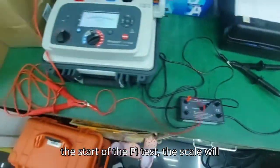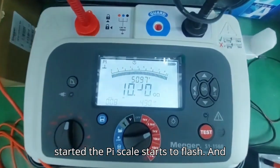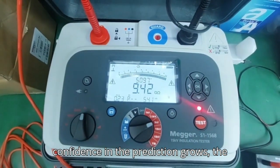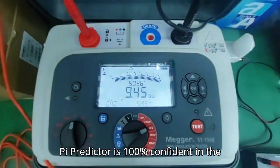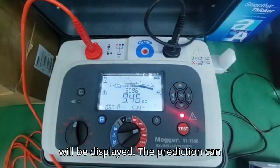During the start of the PI test, the scale will not flash. Then once the prediction has started the PI scale starts to flash. Prediction starts after 3 minutes. As the confidence in the prediction grows, the scale will become more narrow. When the PI predictor is 100% confident in the prediction, the test will end automatically and the predicted PI value will be displayed.